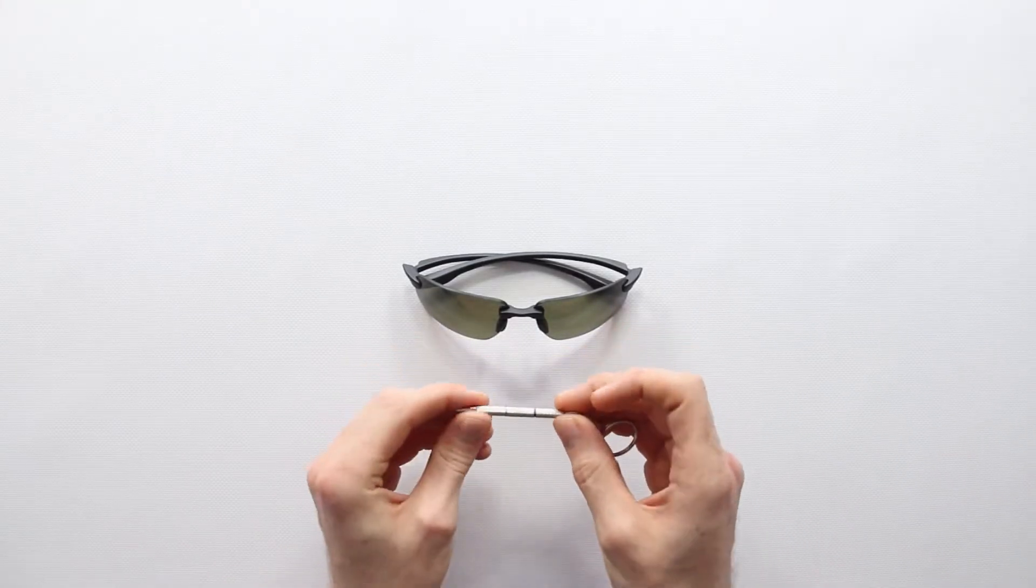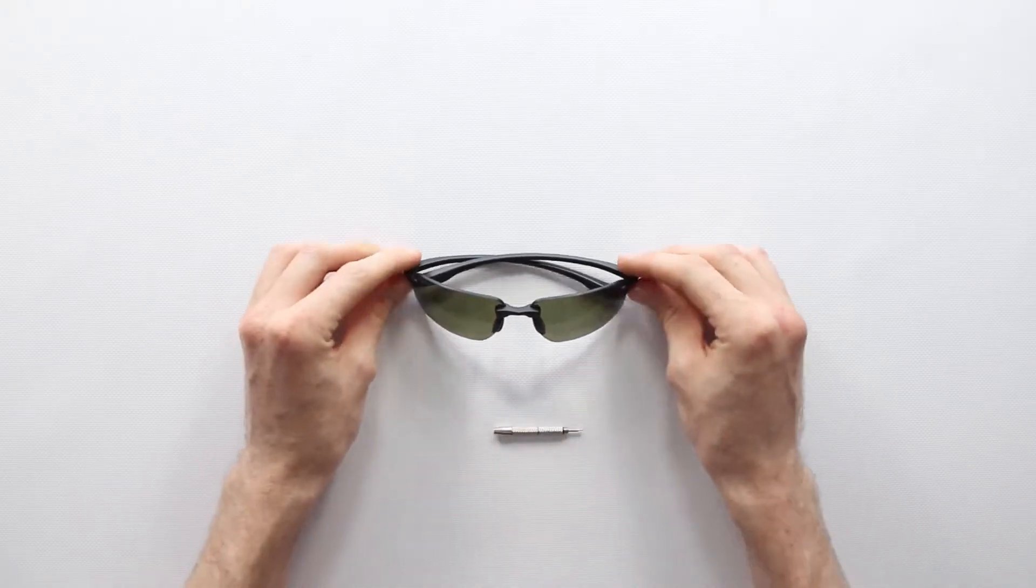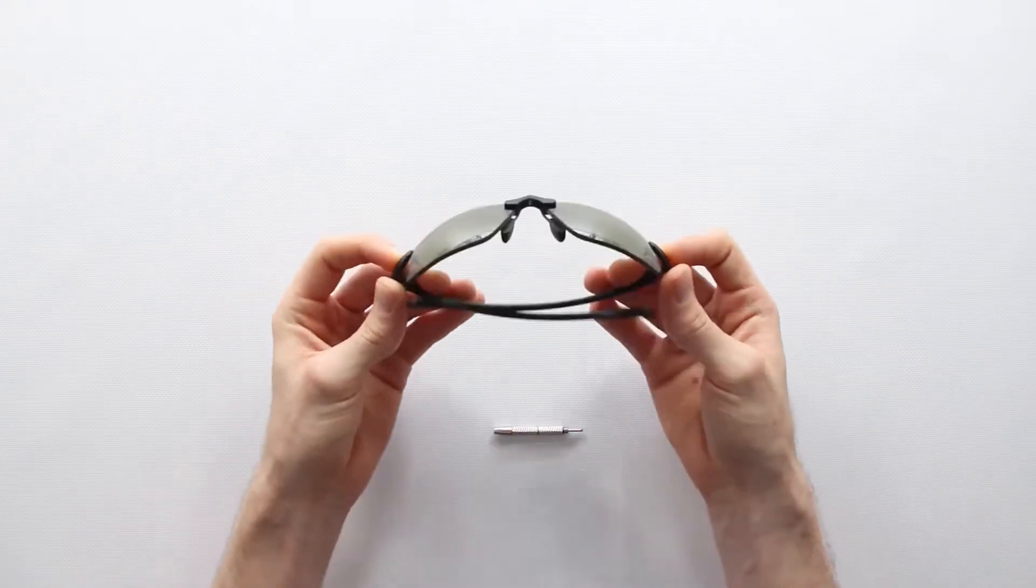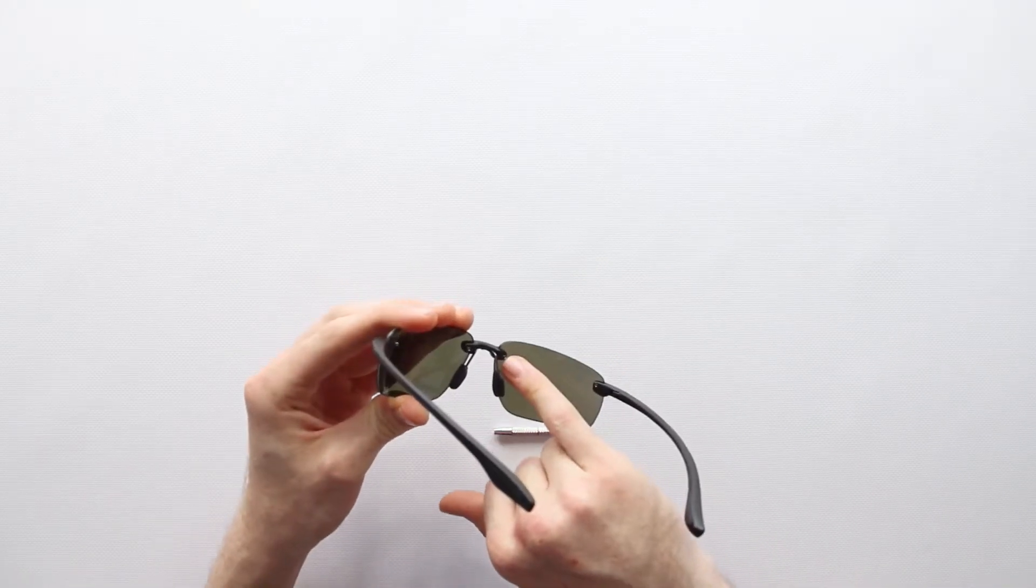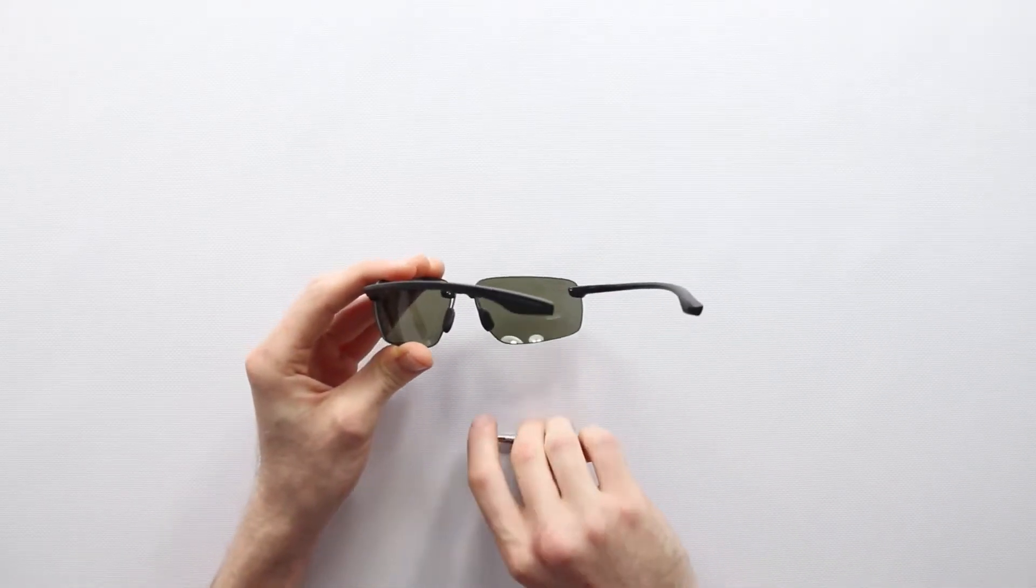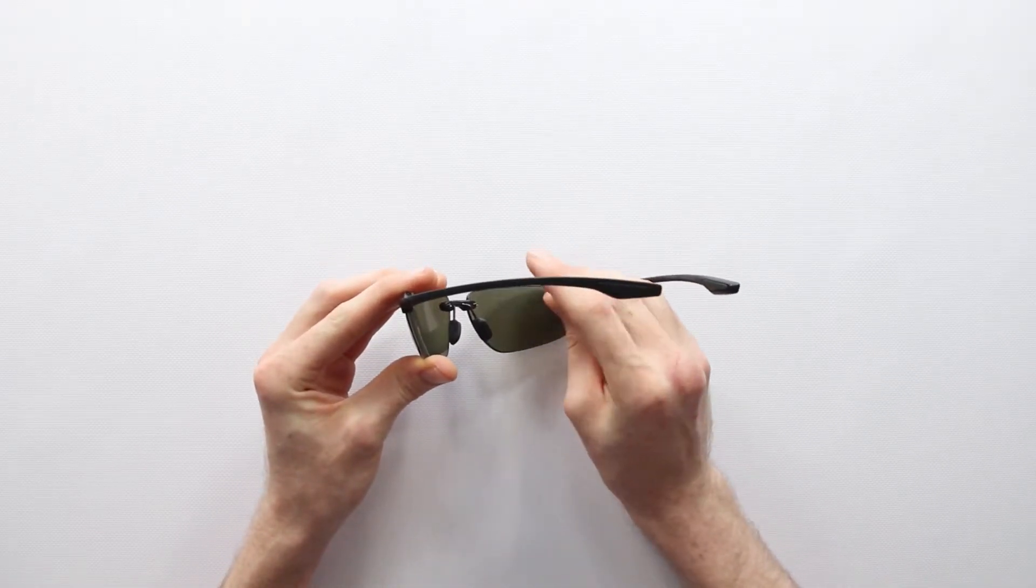The Serengeti Sport Sunglass Model Arise is unique as it has plastic arms and a plastic nose bridge section but no frame on top of the lenses. Four screws attach these lenses with one screw at the base of each arm and one on either side of the nose bridge section.